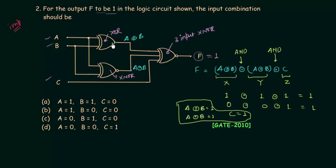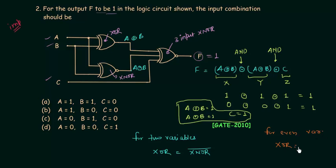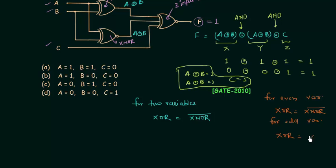The correct approach uses this key property: for an even number of variables, XOR is the complement of XNOR, and for an odd number of variables, XOR equals XNOR. Since we have a two-input XOR and a two-input XNOR gate, XOR is the complement of XNOR. So A XOR B equals the complement of A XNOR B. Looking at the expression for F, we have (A XOR B) XNOR (A XNOR B).